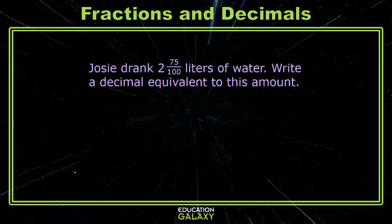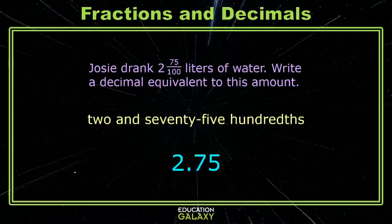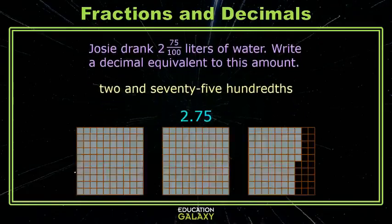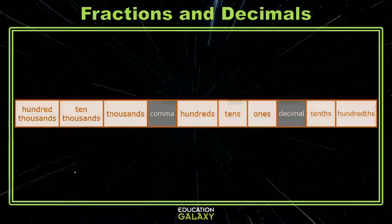So, Josie drank two and seventy-five hundredths liters of water. How do we write that as a decimal? Well, how do we say it? We say two and seventy-five hundredths. That's a two in the ones place, followed by the decimal and seventy-five. And here is our visual aid. So, now you know about these new exciting places, tenths and hundredths. And you can go practice using them.